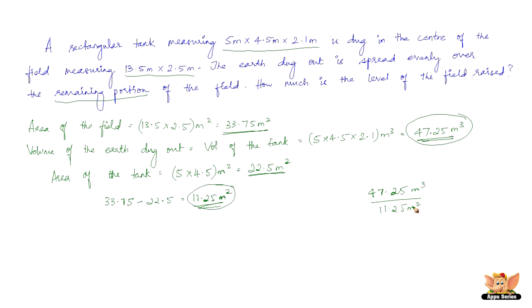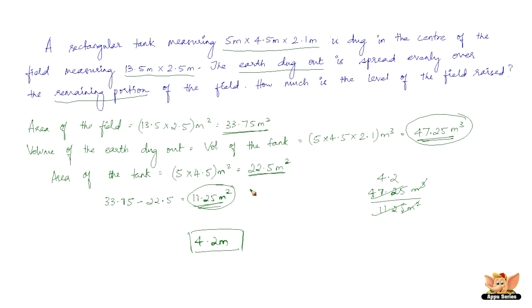Dividing the volume by the area gives 4.2 meters. Therefore 4.2 meters is the height by which the remaining field is raised due to the spreading out of the earth that was dug out. This ends the problem.